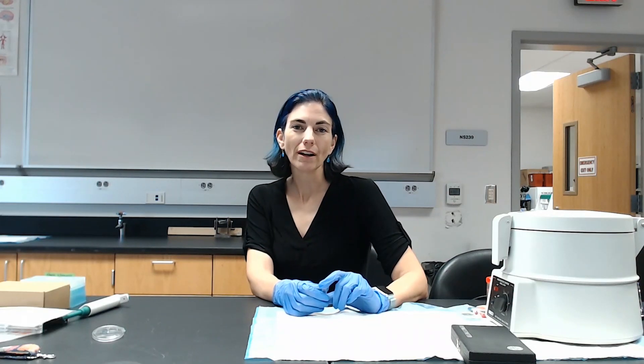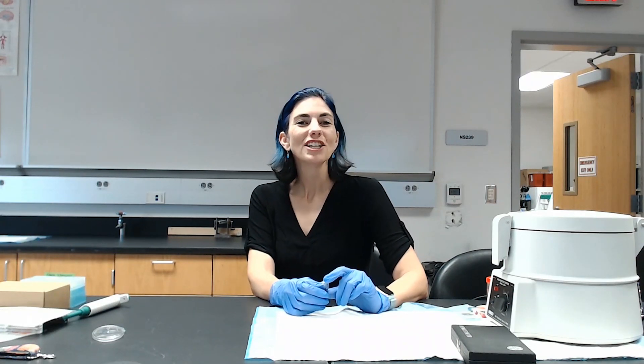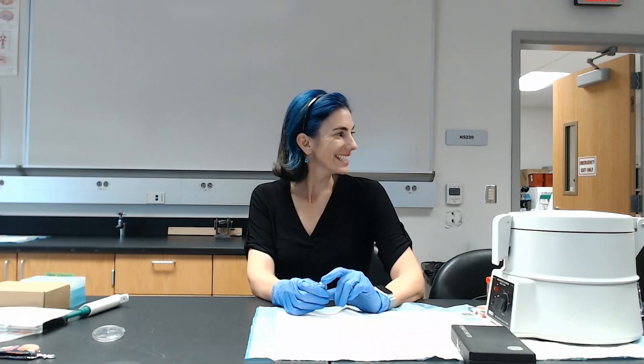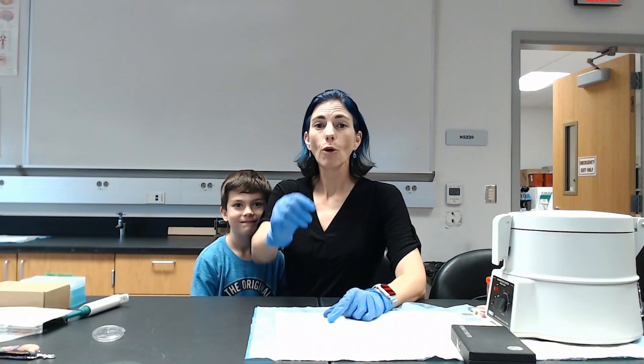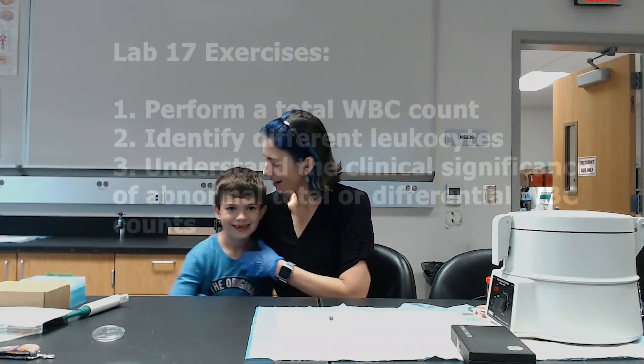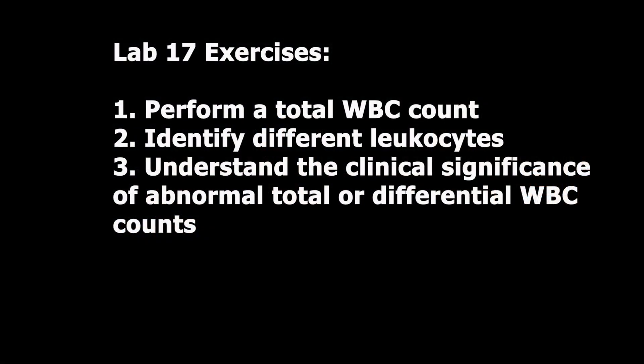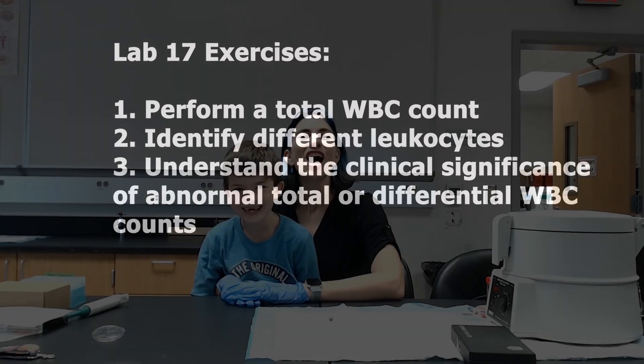This tutorial aims to walk you through lab 17. Lab 17 looks at white blood cell counts — both total and what are called differential. We're going to do a total white blood cell count and approximate a differential white blood cell count.